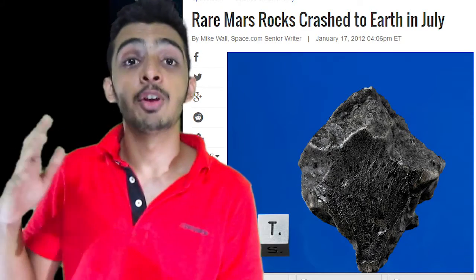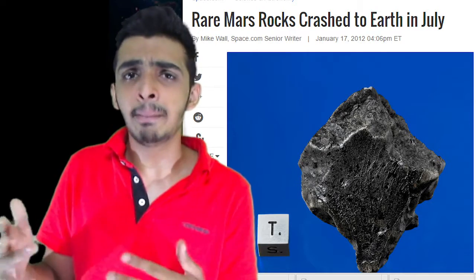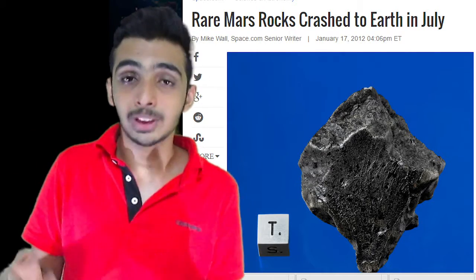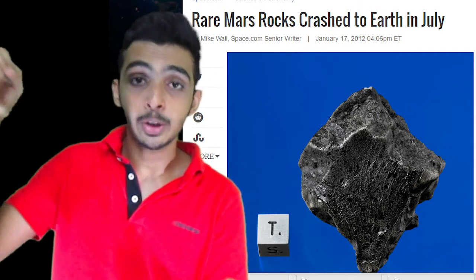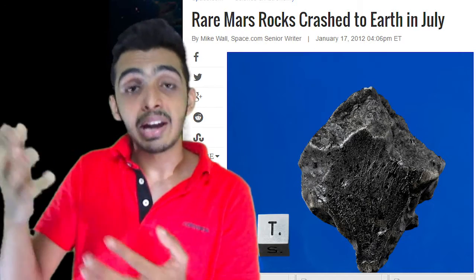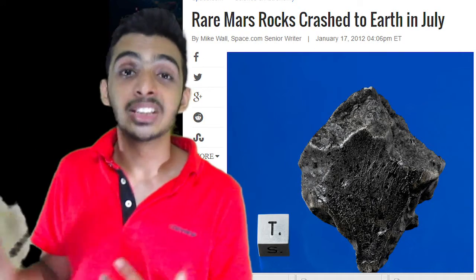Most meteorites are fragments from comets and asteroids. We humans even have samples from Mars — there have been impacts caused by asteroids or comets on Mars, due to which material from Mars was ejected and then traveled through space, ending its journey on Earth. As a fun fact, a meteorite the size of a car on average enters the Earth's atmosphere every year, though most do not reach the ground but burn up in our atmosphere.